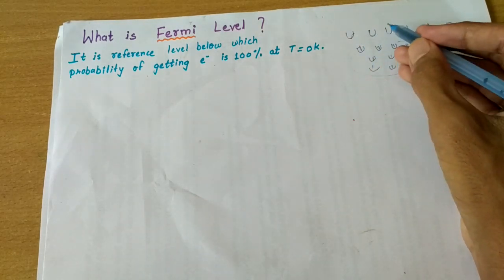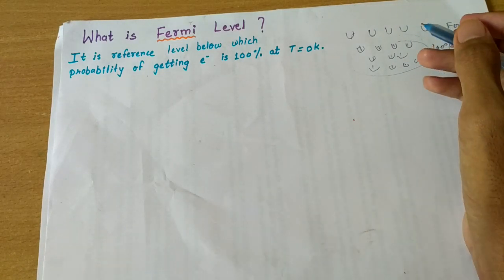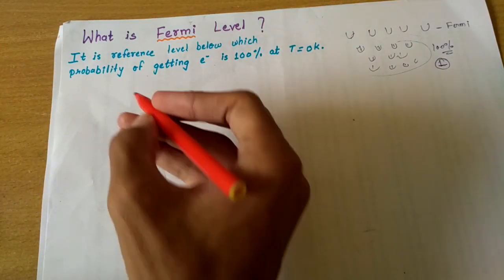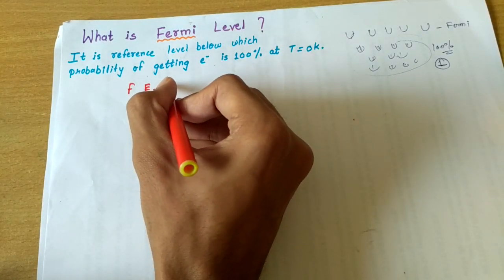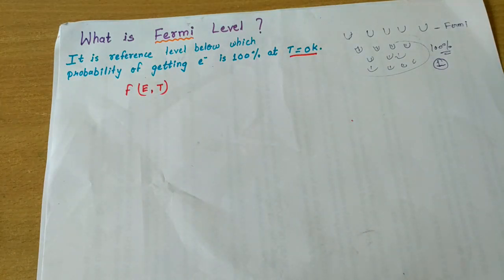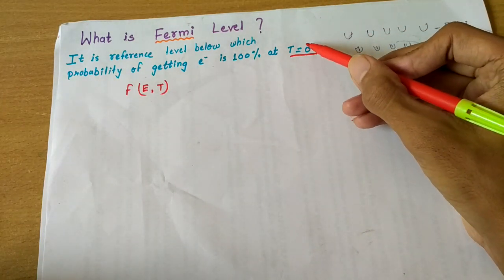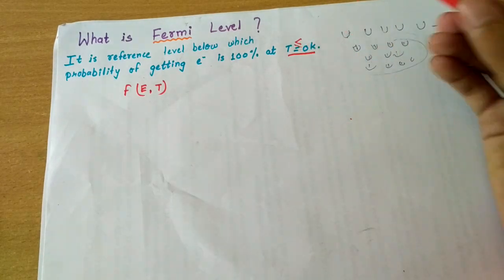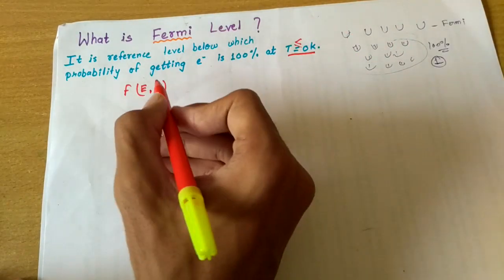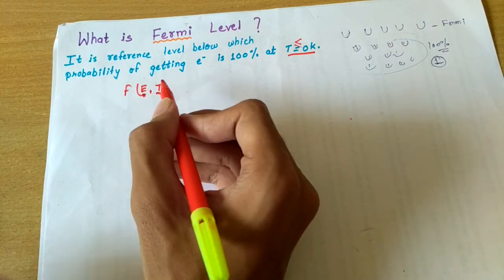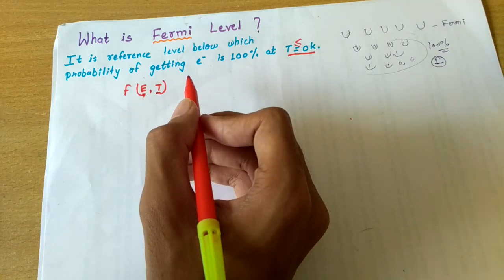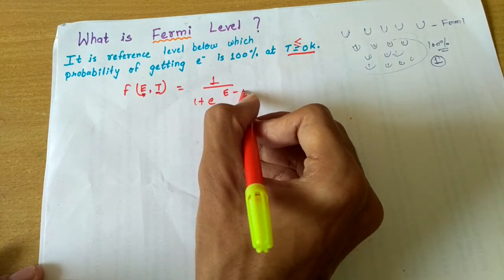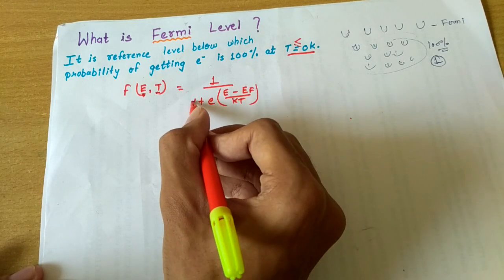At the Fermi level, the probability is calculated by the Fermi-Dirac function, given by f(E, T), since it is a function of both energy and temperature, where temperature T is in Kelvin. At zero Kelvin or less than zero Kelvin, the function f(E, T) is given by one upon one plus e raised to (E minus Ef) divided by kT, where k is the Boltzmann constant.